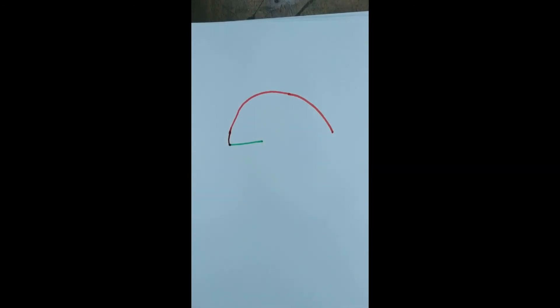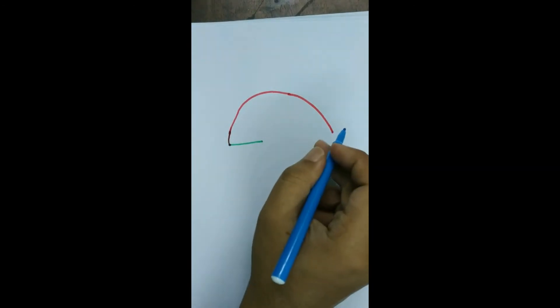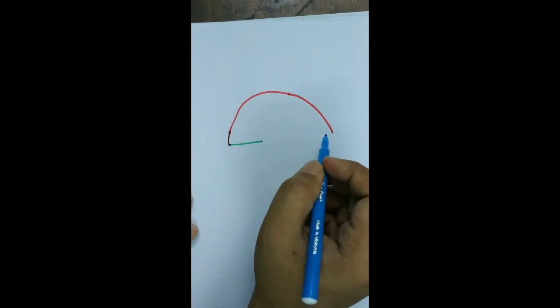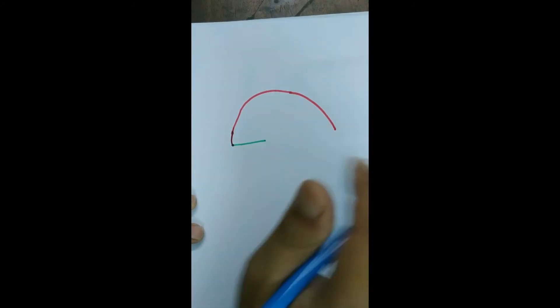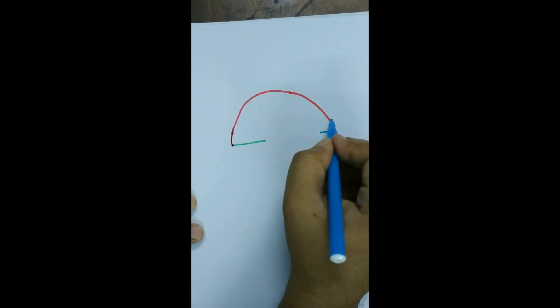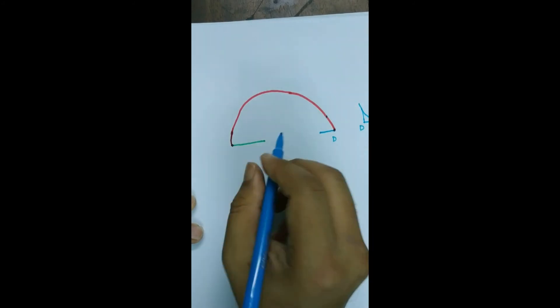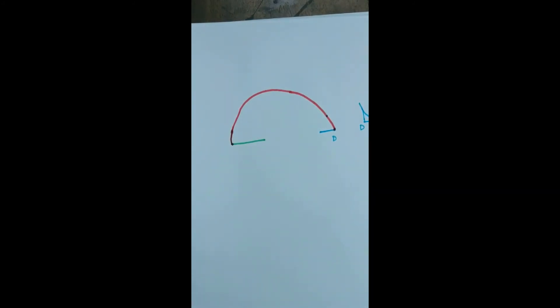If we find there is excessive tension at closing the flap, there are two techniques to overcome that problem. One is we can put a back cut here. Or we can go for a borrowed triangle, that is at the D point. So if we go for back cut then the flap will look like this.